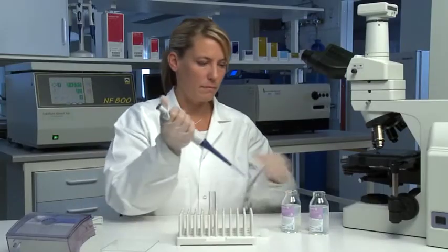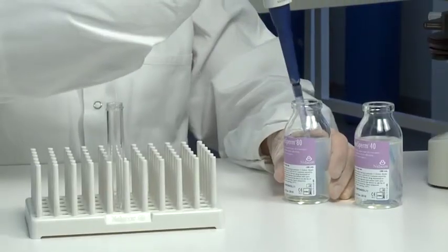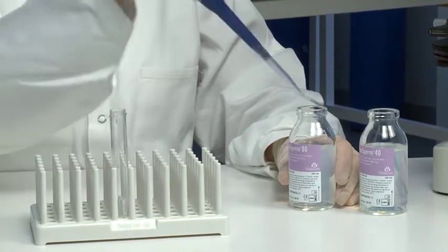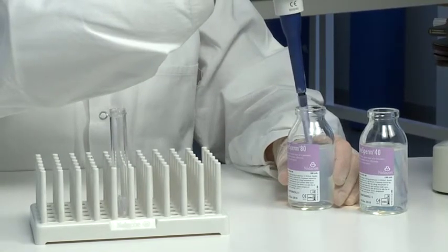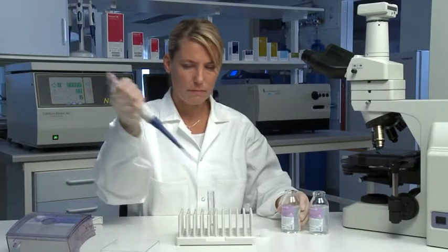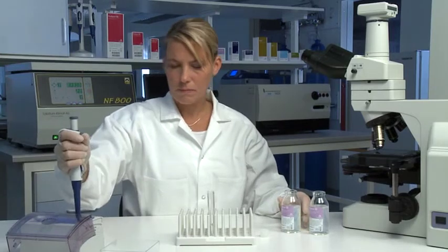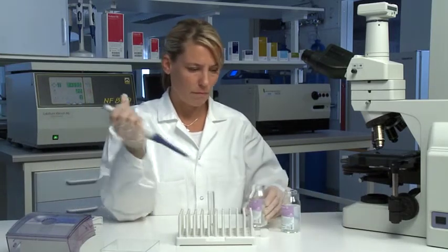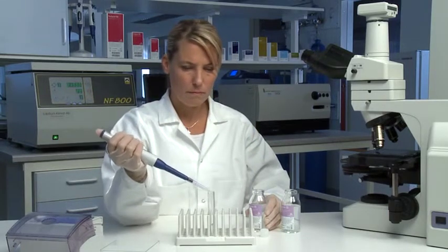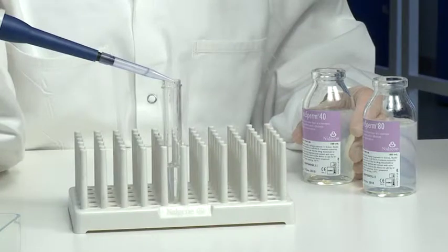Pipette 2ml of PureSperm 80 into a sterile conical centrifuge tube. Carefully layer 2ml of PureSperm 40 on top of PureSperm 80. Make sure not to disrupt the layers, creating a sharp interface between them.